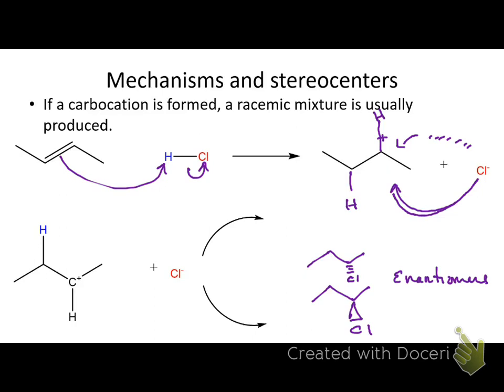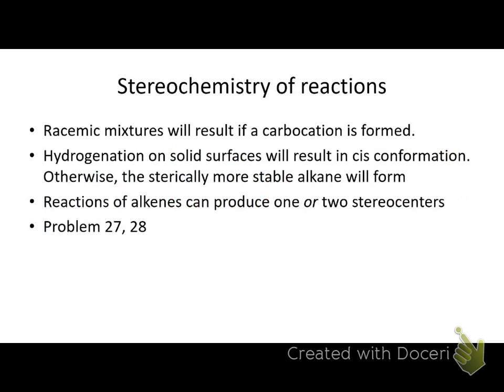We call these solutions racemic — or racemates, though you don't hear that term too often. Sometimes when you react an alkene you can get two stereoisomers out of it, depending on whether there's a hydrogen on the first center during hydrohalogenation reactions. That's it for that chapter.